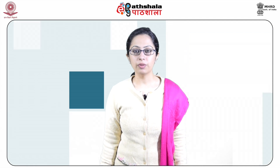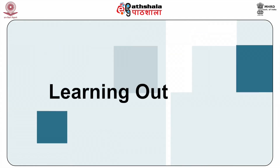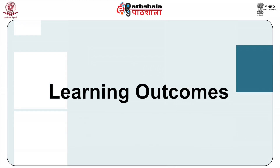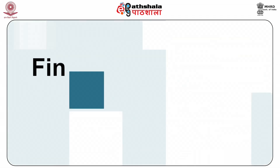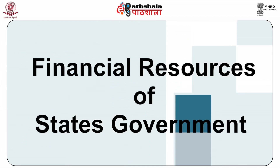Due to these reasons, the consolidated financial position of state governments is becoming worse. In the era of liberalization and decentralization of the economy, controlling the debt burden and increasing the resources of state government is necessary to improve various macro-level indicators. After studying this module, you shall be able to know the financial resources of state government, understand the deficit and debt structure, know about efforts to control the debt-to-GDP ratio, and know about the expenditure responsibilities of state government.